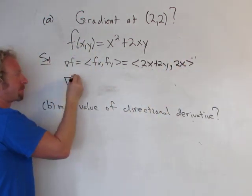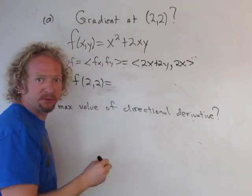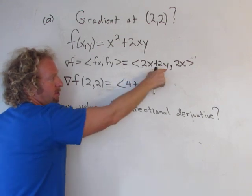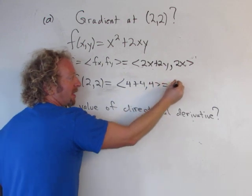Alright, so the gradient at (2,2), all you do is plug in 2 for x and 2 for y. So you get 2 times 2 which is 4 plus 2 times 2 which is 4, and 2 times 2 is 4, so we get <8,4>.